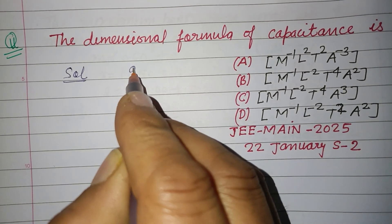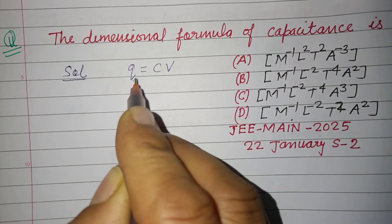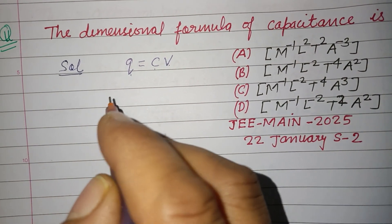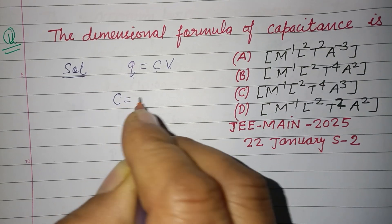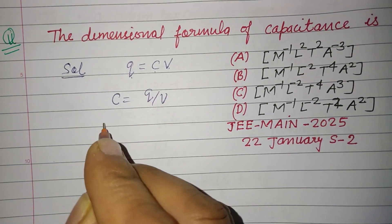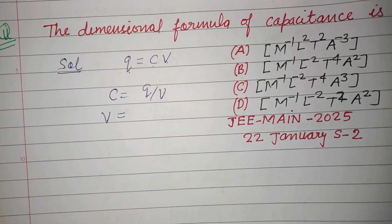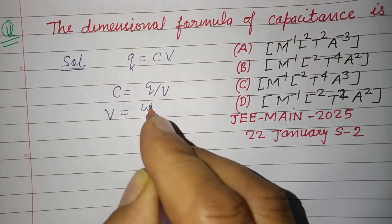You know that q equals CV, where q is charge, C is capacitance, and V is potential. So C equals q over V. And you know that V equals W upon q.